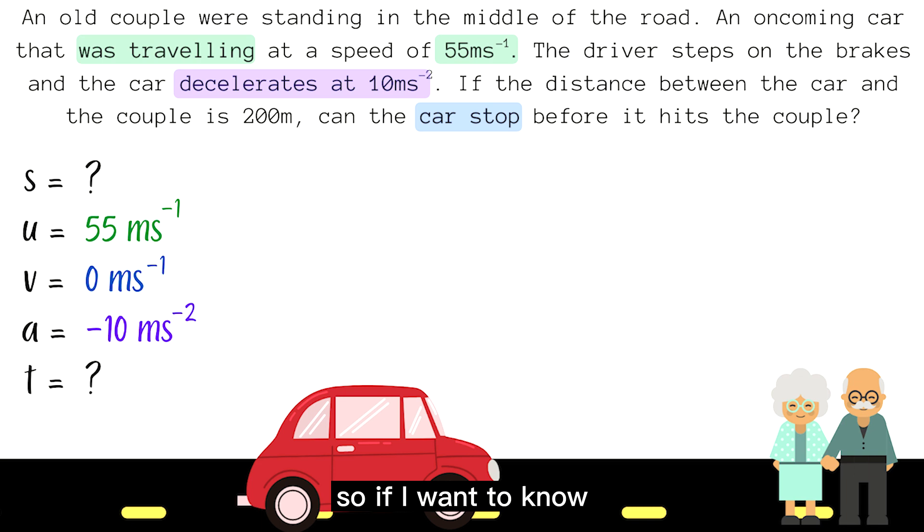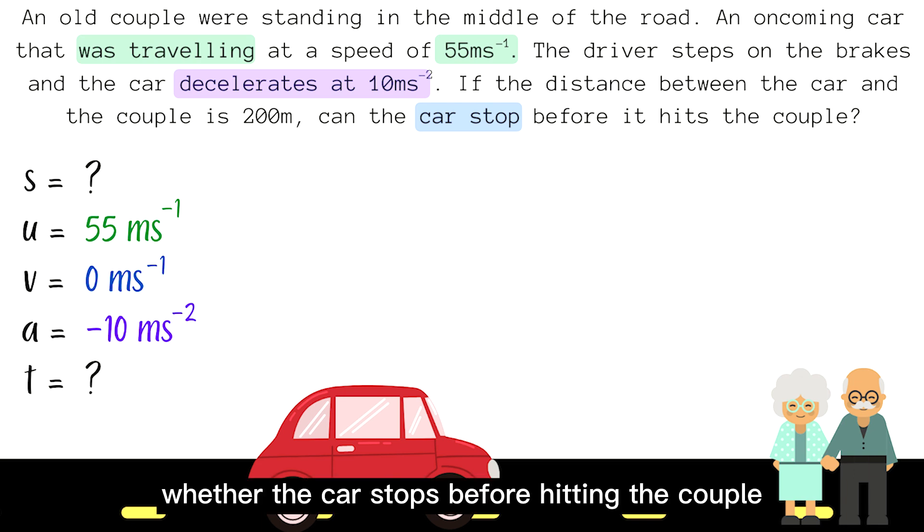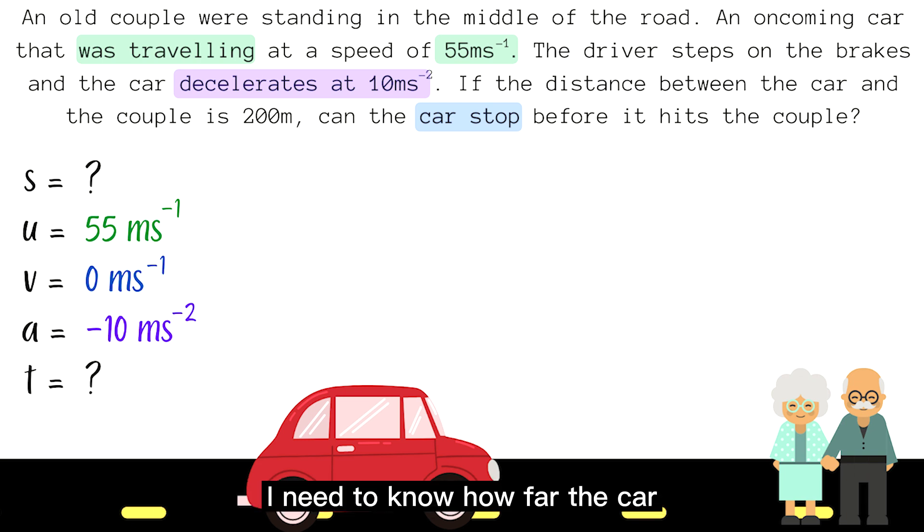So, if I want to know whether the car stops before hitting the couple, I need to know how far the car actually travels as it is trying to stop. So, my goal here is to get the displacement S.